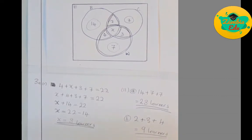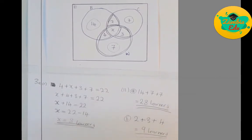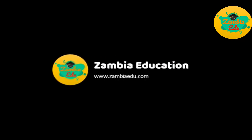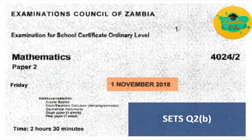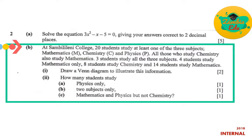That concludes the GCE 2018 sets question. We now move on to the internal paper — mathematics 2018 paper 2, written in November. We are dealing with question 2b: at some college, 20 students study at least one of three subjects: mathematics, chemistry, and physics. All those who study chemistry also study mathematics. 3 students study all three subjects, 4 students study mathematics only, and 8 students study chemistry.